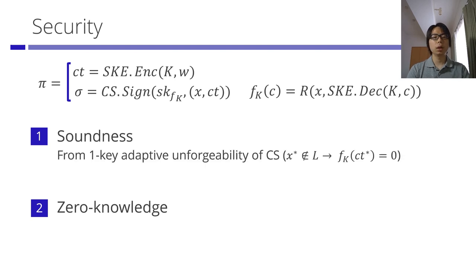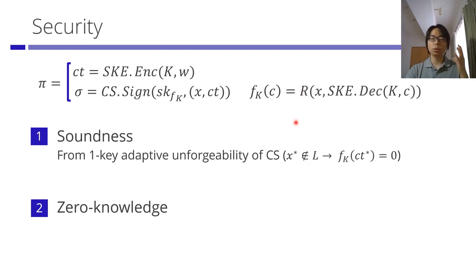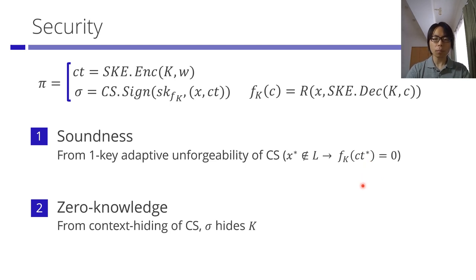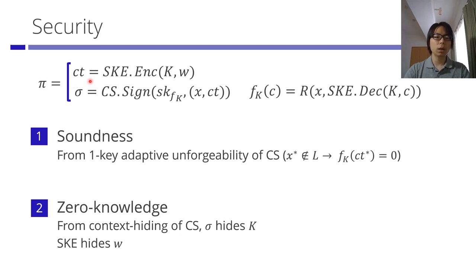The security is straightforward. Soundness follows from unforgeability of the constraint signature: a cheating prover with a statement not in the language has no corresponding witness making F output one, so any valid-looking proof would be a signature on a message where F outputs zero, directly breaking CS unforgeability. Zero knowledge also holds: using context hiding, the signature leaks no information about the SKE key K, so we can invoke SKE IND-CPA security to hide witness W, achieving zero knowledge.